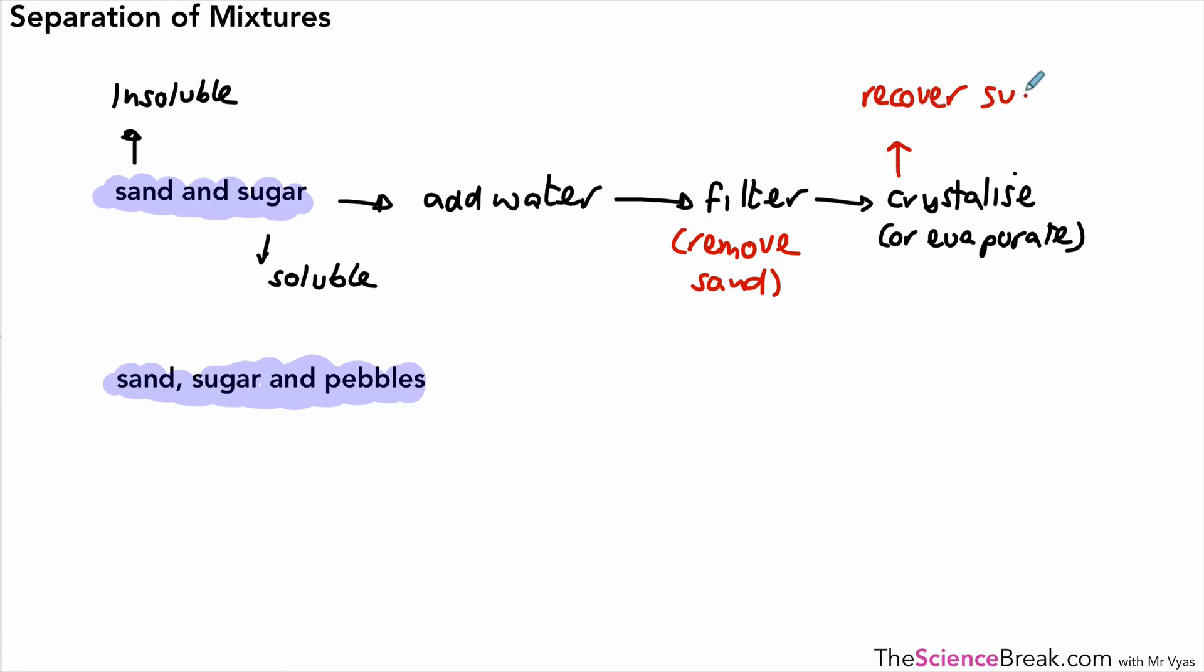In this case, in this example, we're not recovering the water that we've added. So that's like using a two-step process to separate out those two parts. In this one, it's not actually much more difficult than the previous one. You could actually, if the pebbles were big enough, just pick them out. Or if you had a sieve that had the right size holes, you could just sieve out the pebbles based on the size. The sand and sugar we've already done just there. So that would be just a case of picking out the pebbles and then using the method above to separate out the sand and the sugar.